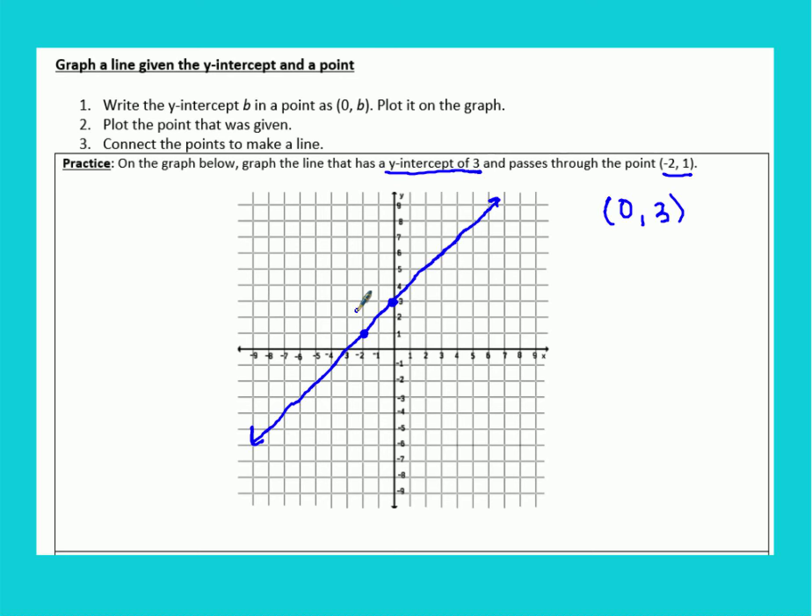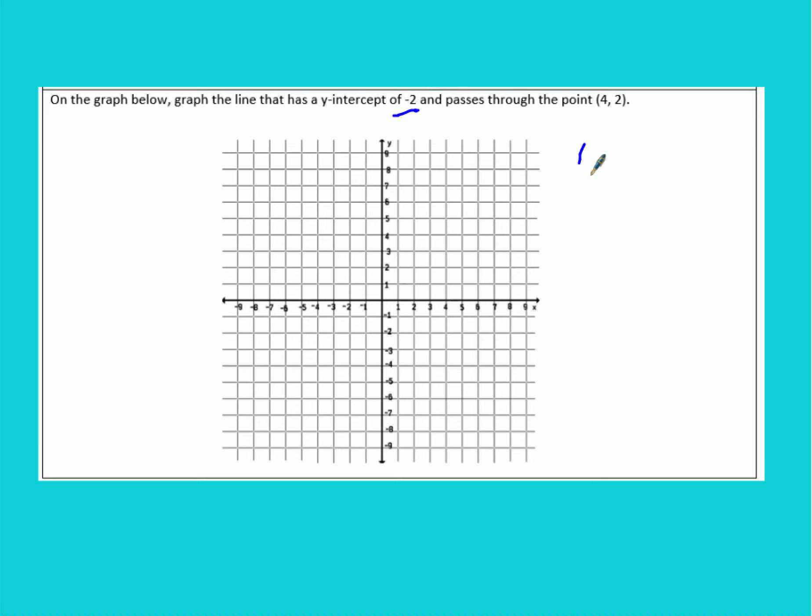Now hopefully you can try this one on your own. To check your work, first thing you want to do, it says the y-intercept is negative 2. So that point is just 0, negative 2. And they give us this point of 4, 2. So we plot both of these points.